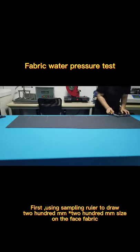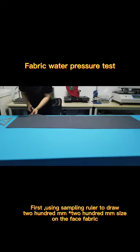First, using sampling ruler to draw 200mm by 200mm squares on the face fabric.